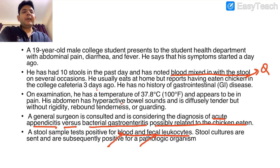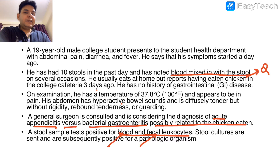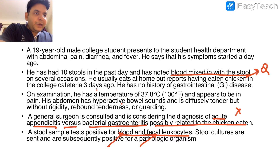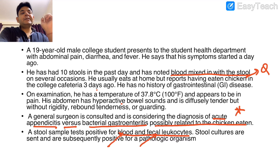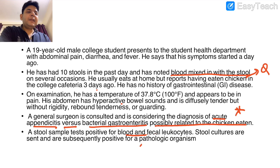Stool cultures are sent and subsequently positive for a pathological organism. The catches in this question are: blood mixed in stool, history of eating chicken, and a surgeon considering appendicitis versus bacterial gastroenteritis. Remember, Campylobacter jejuni infection mimics appendicitis as a surgical entity. Fecal leukocytes indicate inflammatory form of diarrhea.